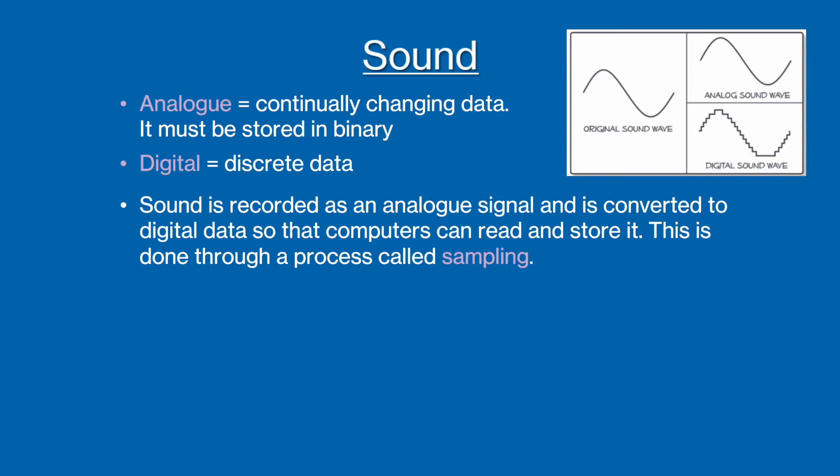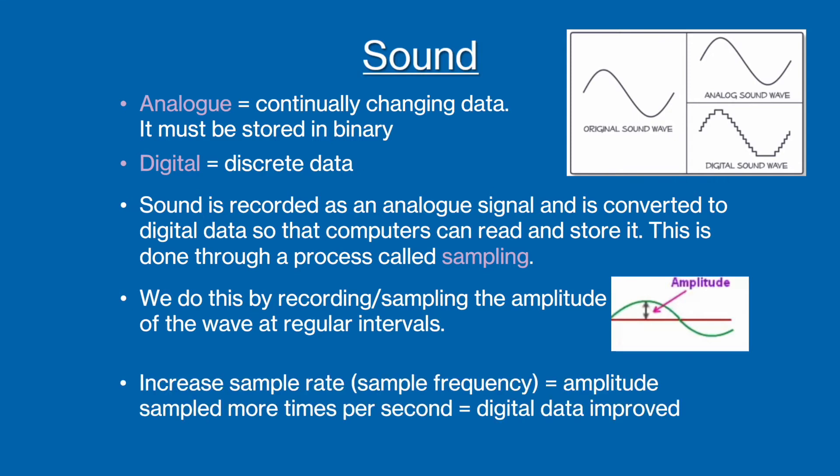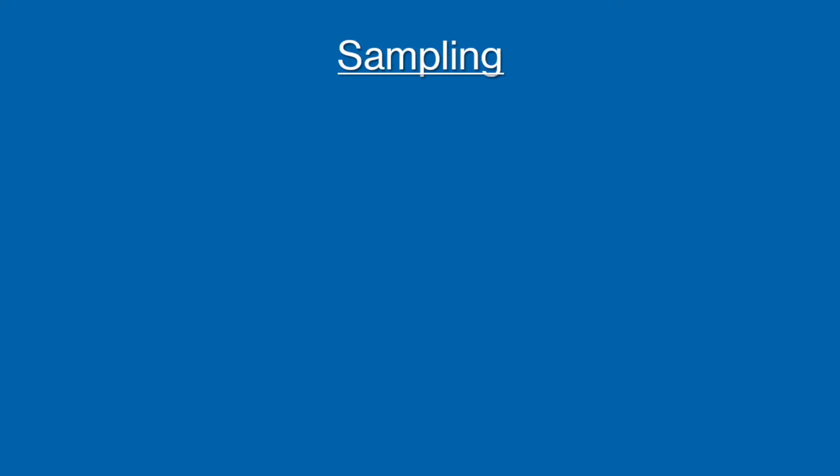This conversion from an analog signal to a digital signal is known as sampling. Sampling works by capturing the amplitude, so the height of a sound wave, at regular time intervals. For example, a sound wave can be sampled every one millisecond, and how often a sound wave is sampled per second is called the sample rate.